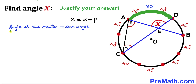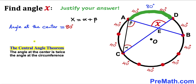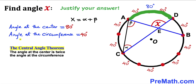We know that the angle at the center is the same as the arc angle. Since our arc angle is 80 degrees, our angle at the center is going to be 80 degrees. Now let's recall the central angle theorem: the angle at the center is twice the angle at the circumference, so the angle at the circumference is going to be half of 80.